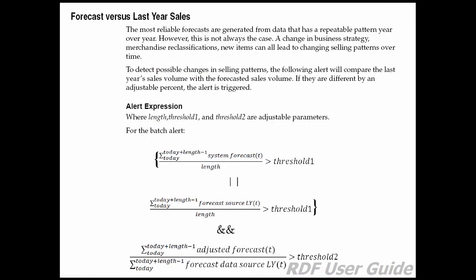We continue with the forecast versus last year's sales alert. The most reliable forecasts are generated from data that has a repeatable pattern year over year. However, a change in business strategy, merchandise reclassifications, and new items can all lead to changing selling patterns over time. To detect possible changes in selling patterns, this alert compares last year's sales volume with the forecasted sales volume. If they differ by an adjustable percent, the alert is triggered.